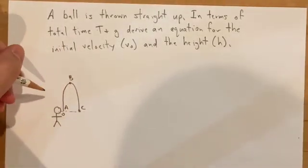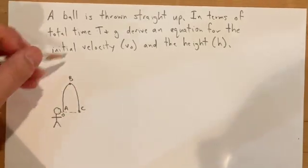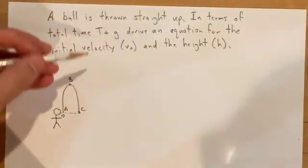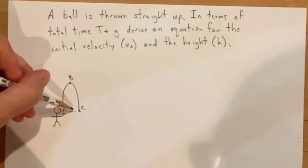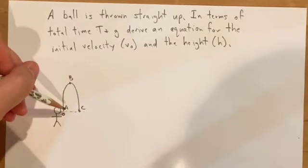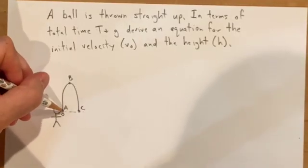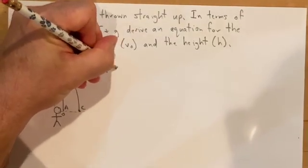Then you have to decide where you're going to go on your picture. If we're talking about deriving an equation for initial velocity, I either need to go from A to B or A to C, and I want to show you how we can do the problem either way. Let's say we decide we're going to go A to B.